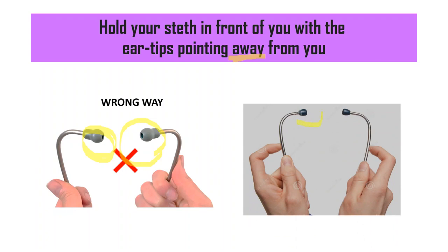Instead, what you should do is hold it in such a way that the ear tips face away from you. When the ear tips are pointing towards you, you can see those hole-like structures facing you. But when you hold it the right way, when the ear tips are facing away from you, you cannot see that hole. This will be the right way of holding it.